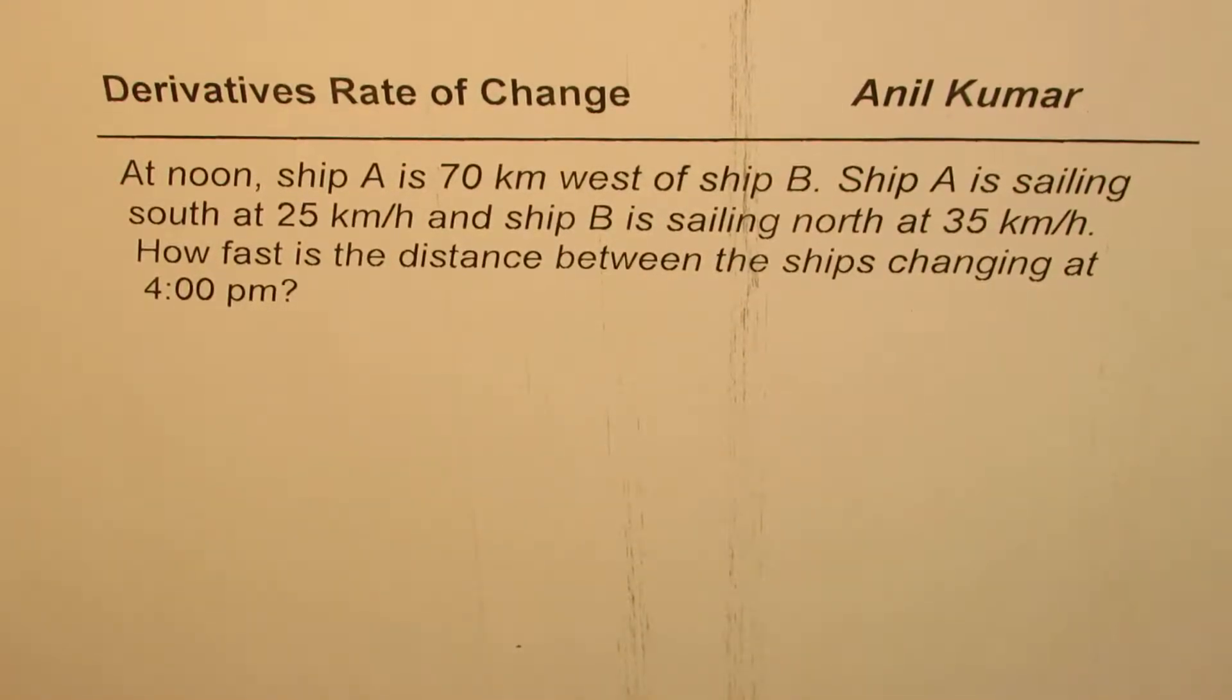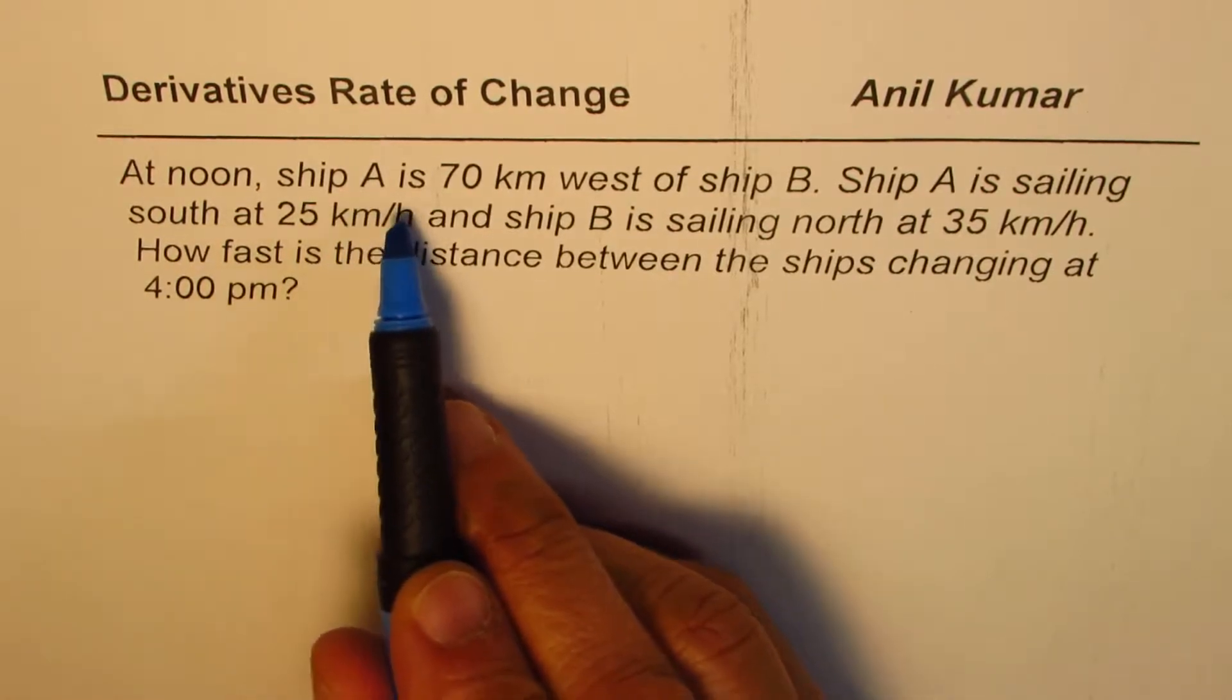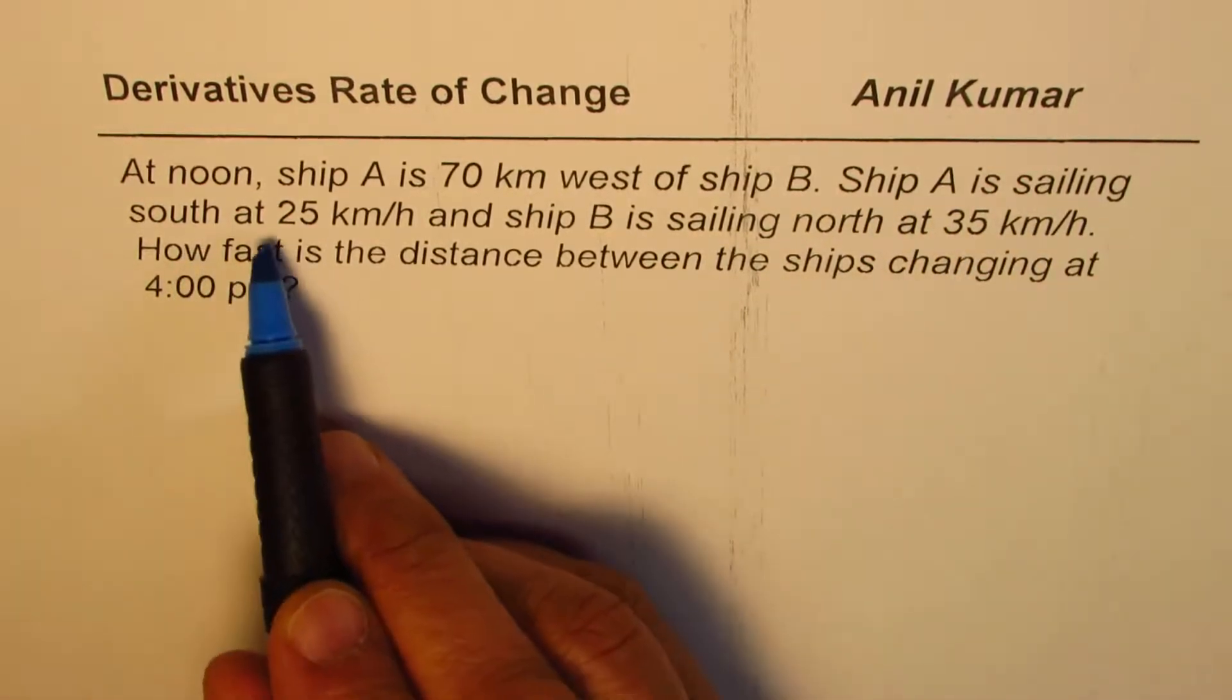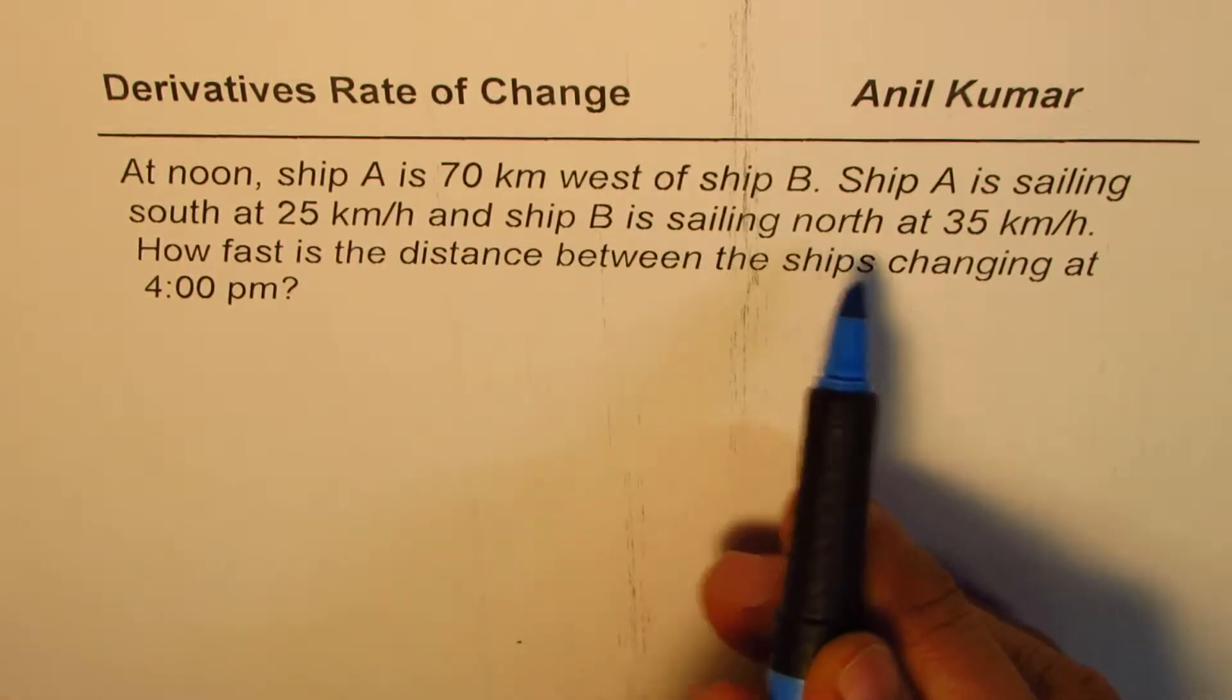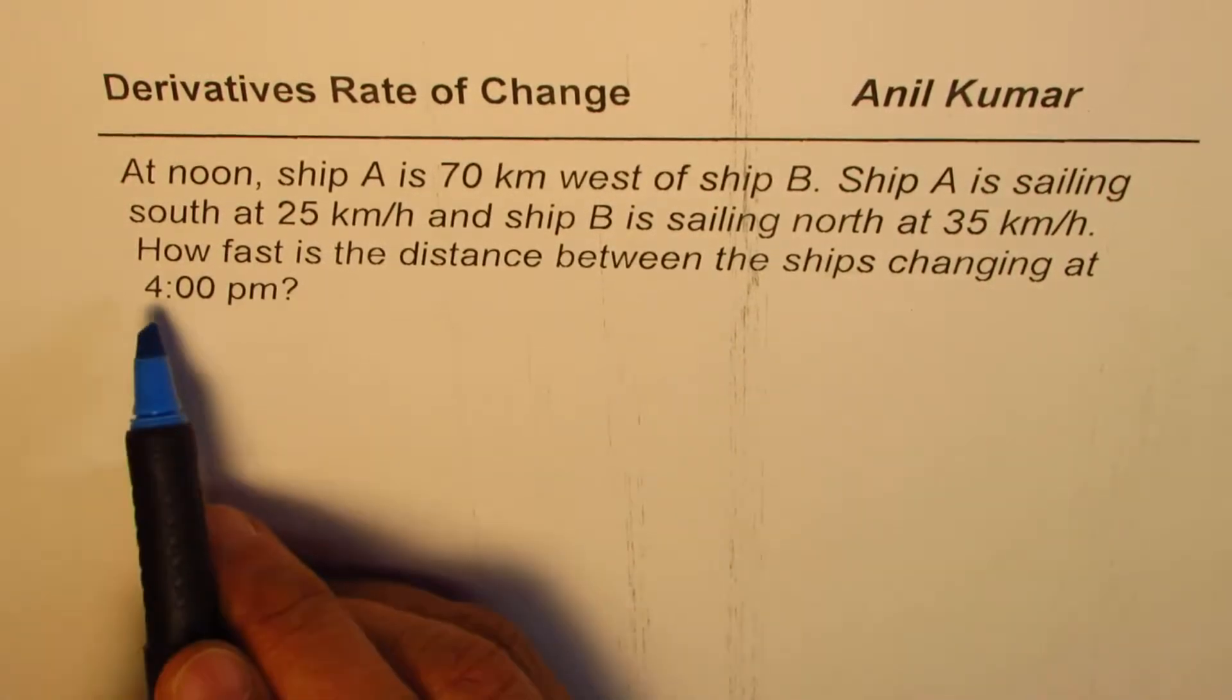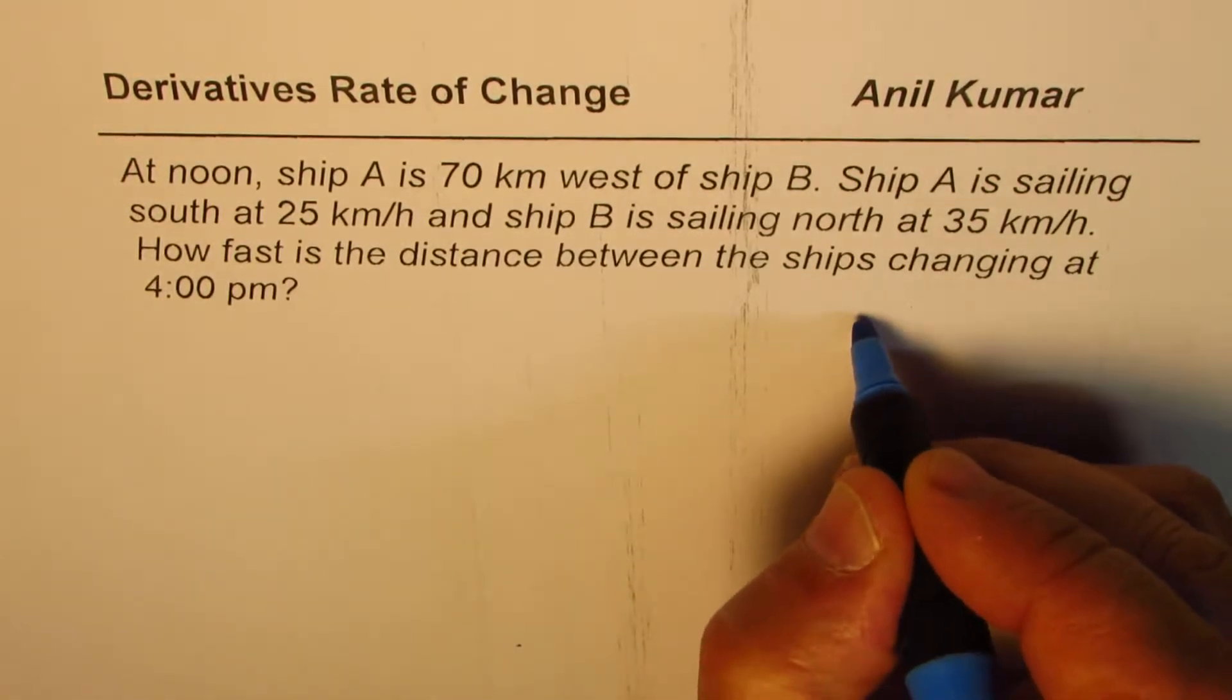I'm Anil Kumar sharing with you an application question from my student Avni. The question here is, at noon, ship A is 70 km west of ship B. Ship A is sailing south at 25 km per hour and ship B is sailing north at 35 km per hour.